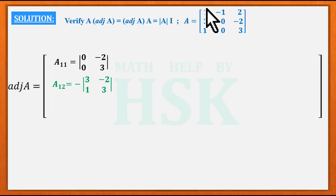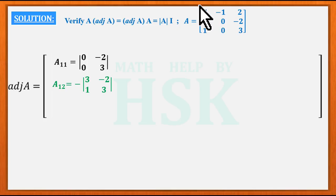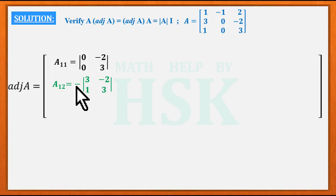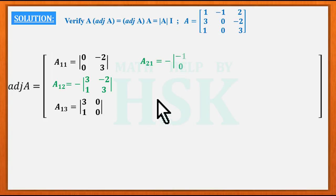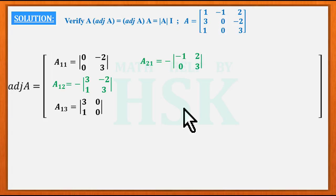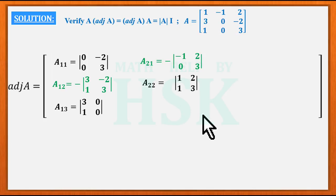For all the off-diagonal elements, the cofactors carry a negative sign. So a13 equals the determinant [3, 0 / 1, 0]; a21 equals minus of the determinant [-1, 2 / 0, 3]; a22 equals the determinant [1, 2 / 1, 3]; and a23 equals minus of the corresponding 2×2 submatrix.